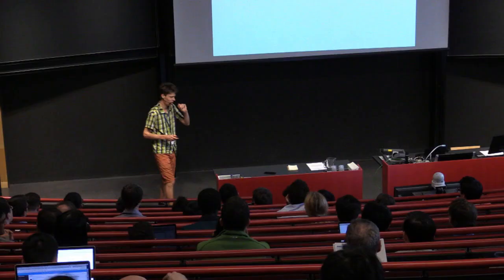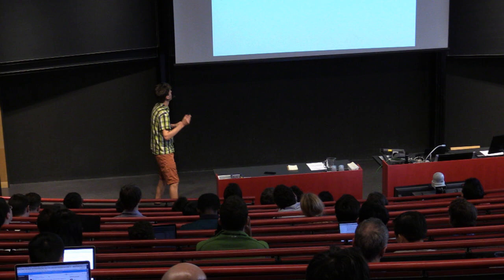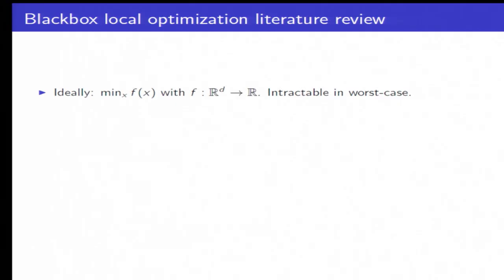So let's do a quick literature review. Ideally, we'd like to minimize some arbitrary function. Of course, this is going to be intractable in worst case. So instead, we want to opt for some sort of notion of approximate local optimality. And for simplicity, let's just say an approximate stationary point, but of course, you can write down the second-order necessary conditions as well.